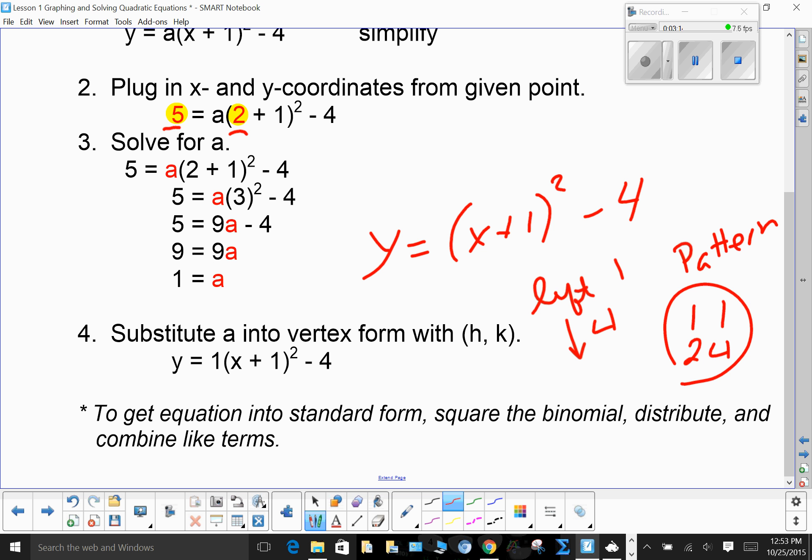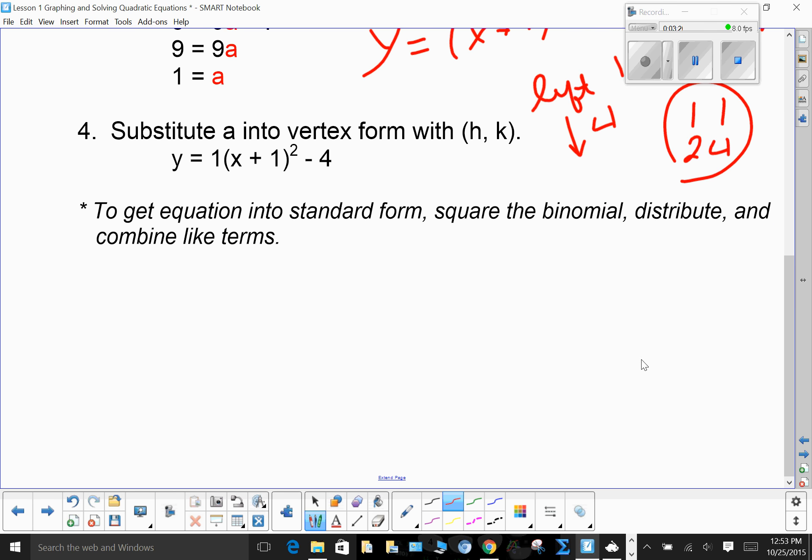Now, if I want to get this particular equation into standard form, I have to do a little bit of work, but it's not hard. And it's all just basic algebra 1. I have (x + 1)² - 4. This is vertex form. First thing I'm going to do is multiply the binomial. And some of you know that as FOIL. So I have y = x² + 2x + 1.